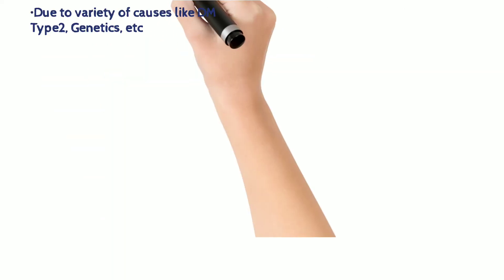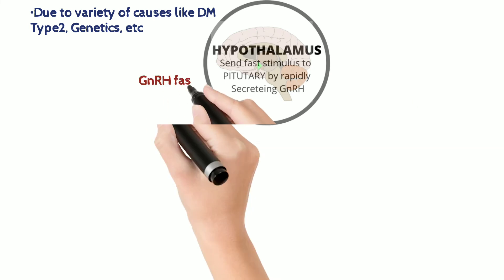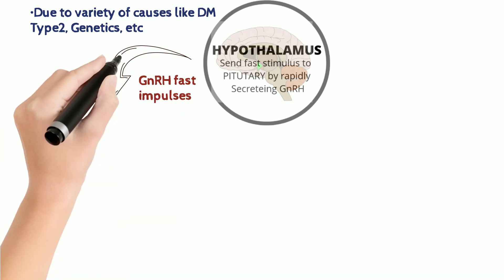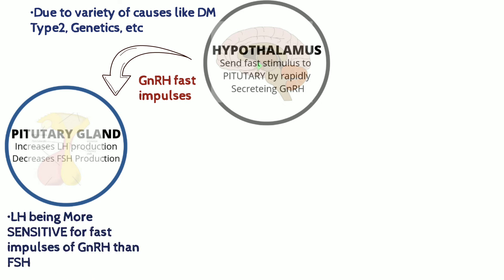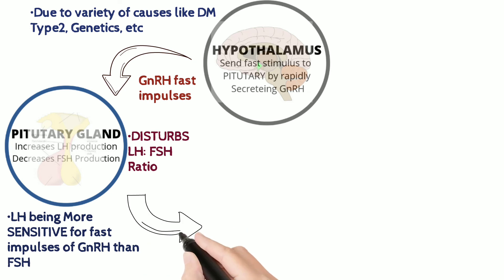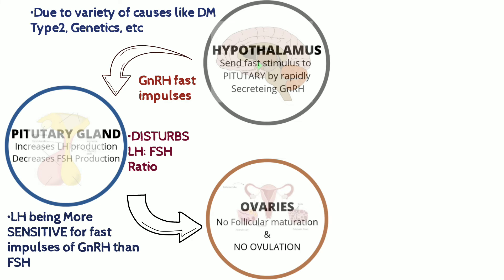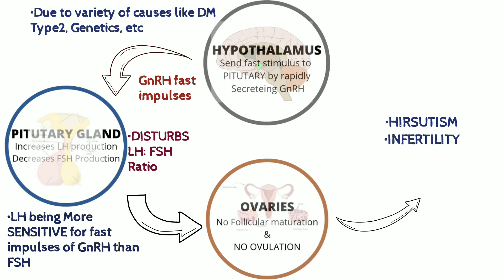Due to a variety of reasons, like diabetes mellitus type 2, our hypothalamus secretes abnormally fast impulses of GnRH, which results in increased LH and decreased FSH production, disturbing the normal LH to FSH ratio, which in turn results in no follicular maturation and no ovulation, causing symptoms which include hirsutism, infertility, multiple cysts, etc.